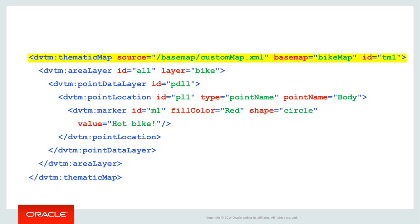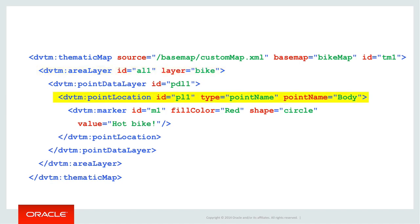To use this custom map in our thematic map, we need to define the source of the XML file — located in a directory under the public HTML directory in our application — as well as the actual base map name, bike map in this case. Then, using the thematic map component is just like we saw previously, though we are limited to points; we cannot use areas. So here we use the bike area layer, then refer to a point data layer and point location tag pointing to the body point name, marking the location with a red circle and some text.